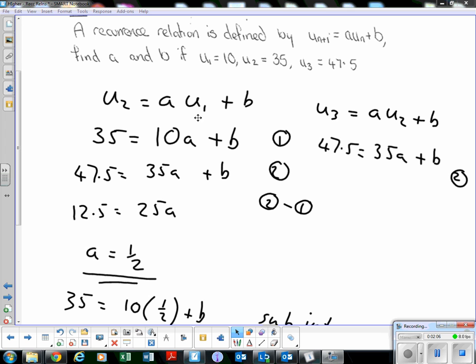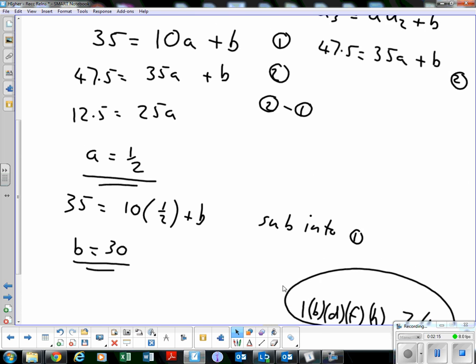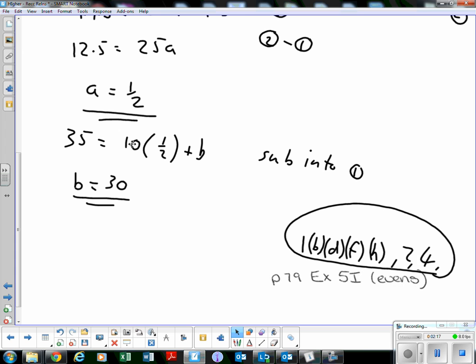We're just solving a pair of simultaneous equations here. We know the value of a is 1/2, so just substitute into equation 1 or equation 2. I'm going to go for equation 1 because the numbers are nicer. So 35 = 10 × (1/2) + b. Well, 10 halves are 5, so b is going to be 30. 30 + 5 = 35.